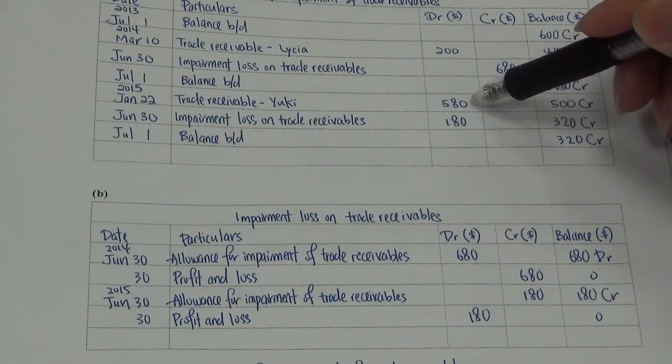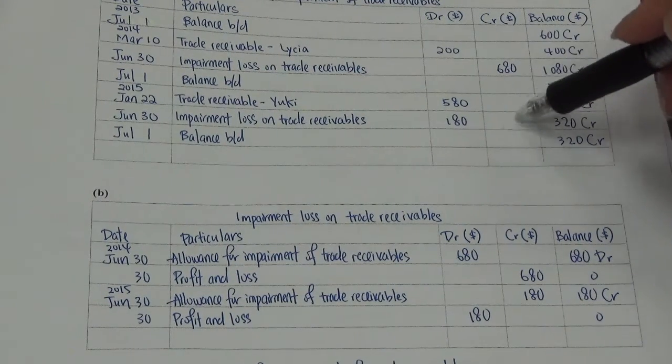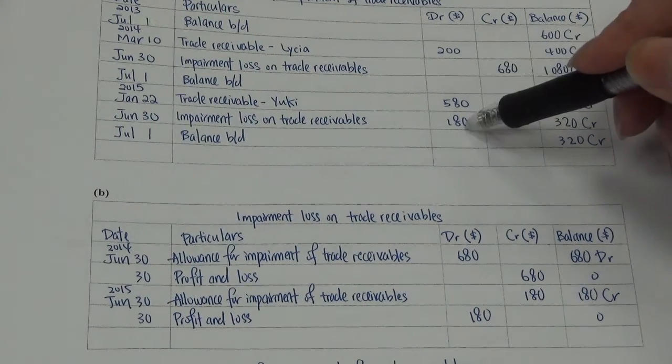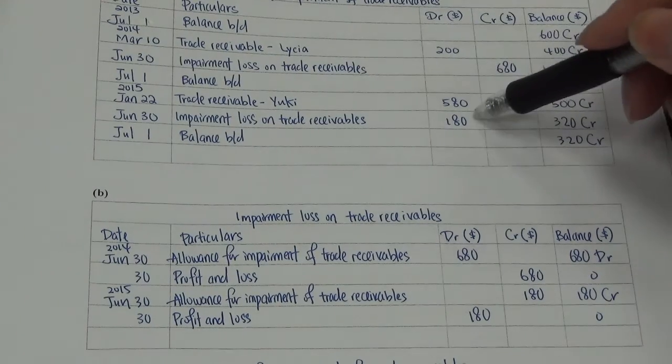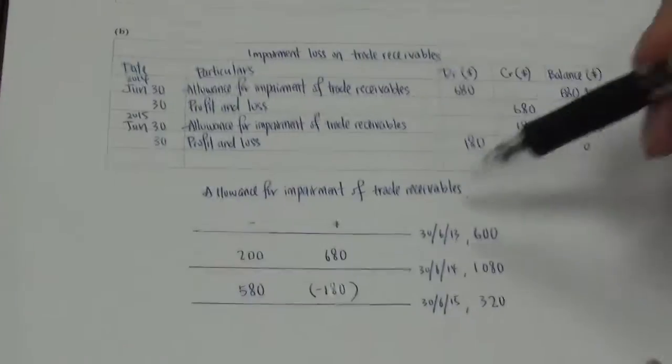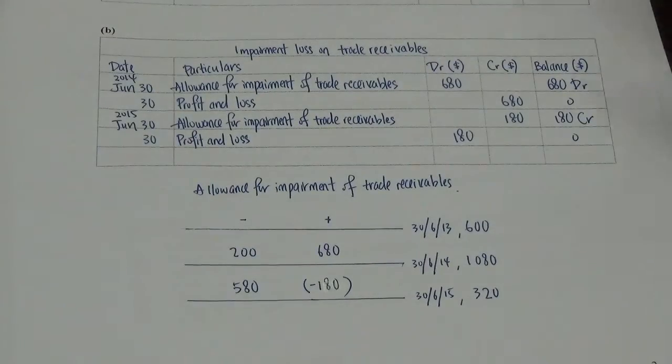580 trade receivables UK. 180. Because it's a negative figure, you have to shift over to the other side. Still write as impairment loss on trade receivables. And end off with balance brought down. Then, like this, finish.